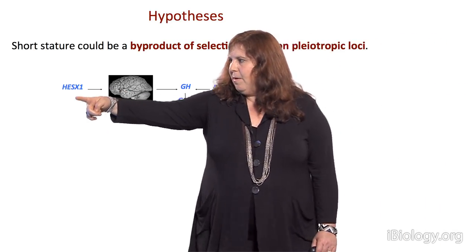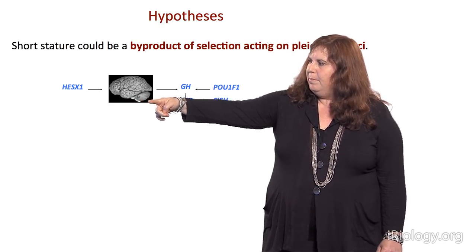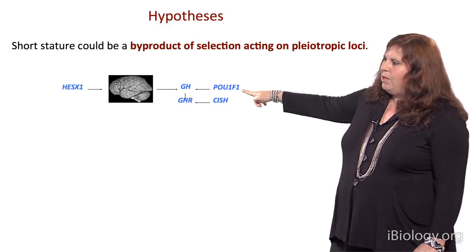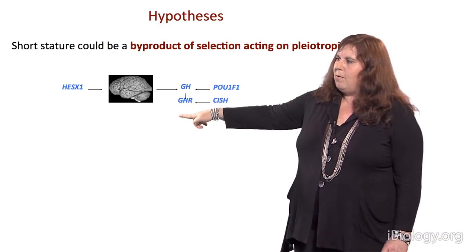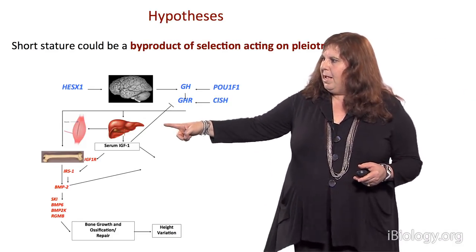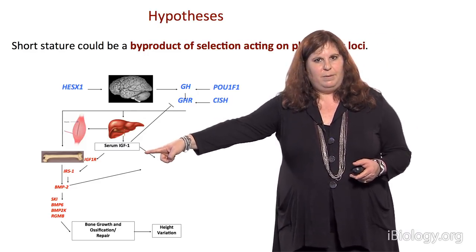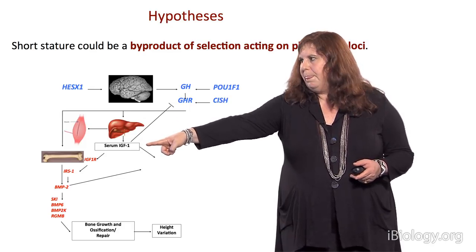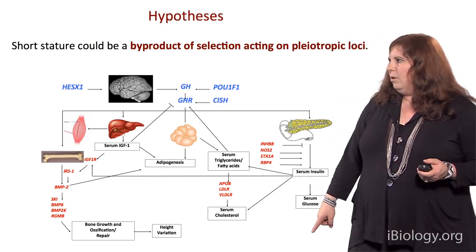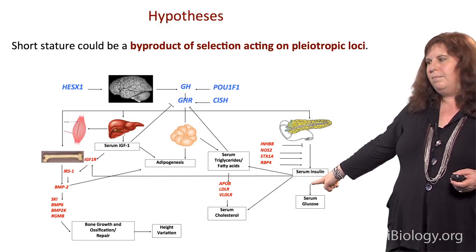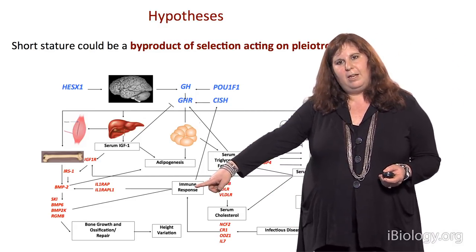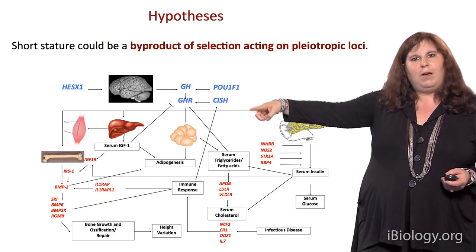Looking at our candidate loci: HESX1 influences expression and development of the anterior pituitary, the site of growth hormone production. Growth hormone expression is also regulated by POU1F1. CISH regulates growth hormone receptor. When growth hormone binds to its receptor, it triggers expression of IGF-1 predominantly from the liver, which has effects on muscle growth, bone growth, and height. Growth hormone also influences insulin metabolism and fat metabolism. Additionally, infectious disease alters immune response and cytokine levels, which can influence gene expression from CISH and other genes in this pathway.